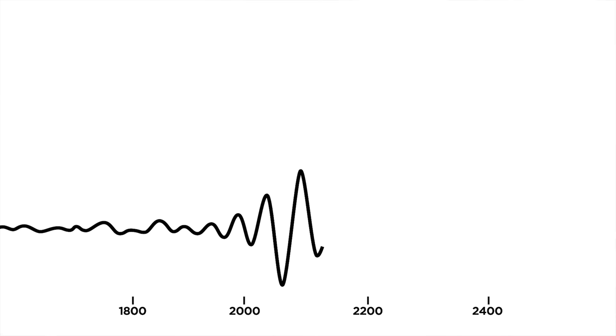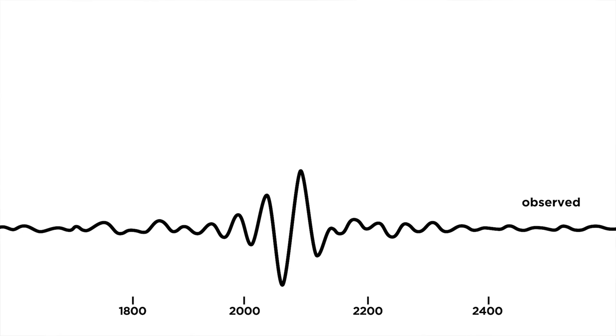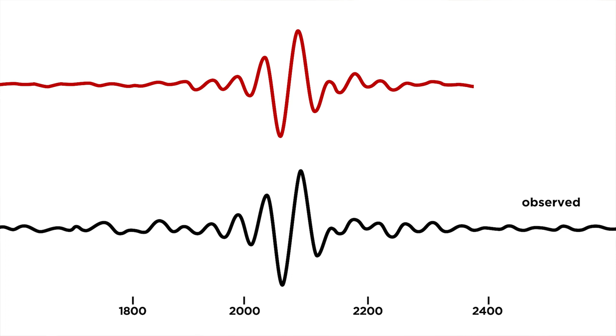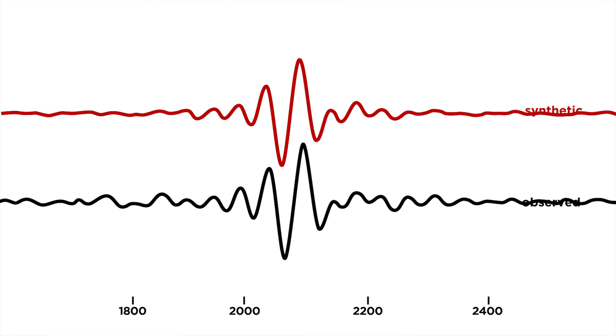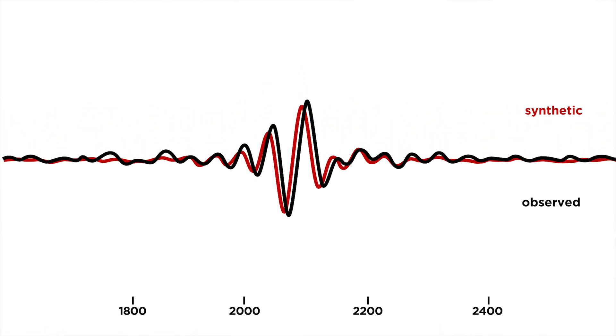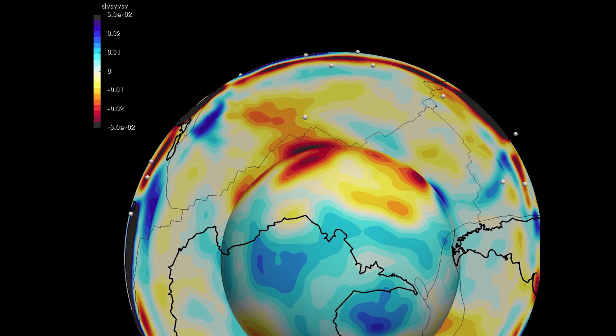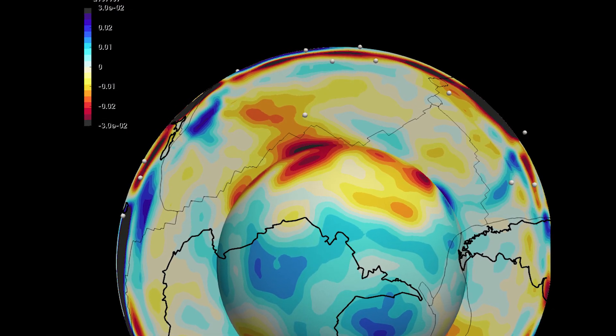The next phase is to try and simulate that process. We propagate numerically, using the equations of physics, how the waves travel through our model of the Earth. That leads to a set of simulated time series. Now we have a set of observations and simulations that can be directly compared, and the differences between those two time series — the observations and the simulations — places constraints on what the Earth's interior can look like. It's that information that tells us how we need to improve our models.